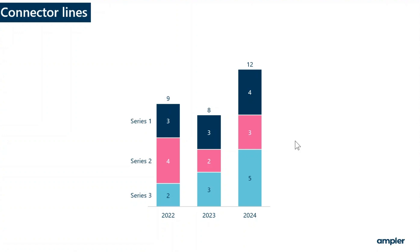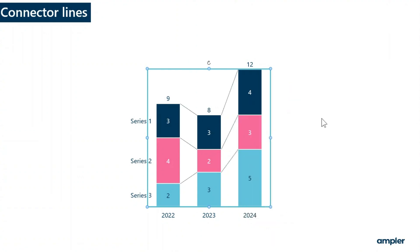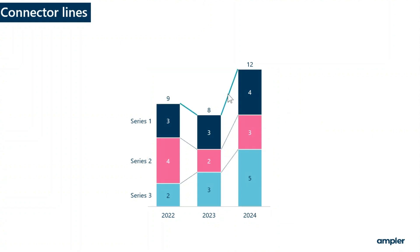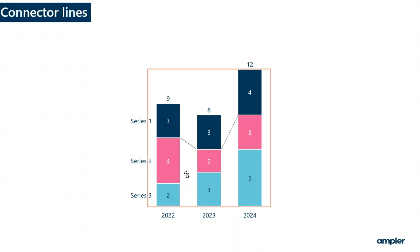To add connectors, right click on the chart and toggle on connector lines from the context menu. Remove unwanted connector lines by selecting them and hitting delete on the keyboard or from the context menu. Connector lines can also be inserted by selecting specific segments before adding them.